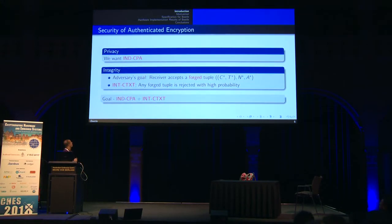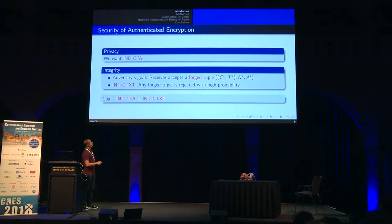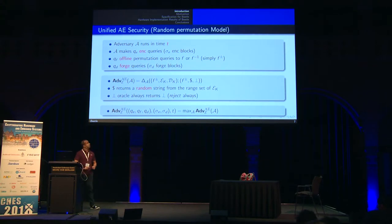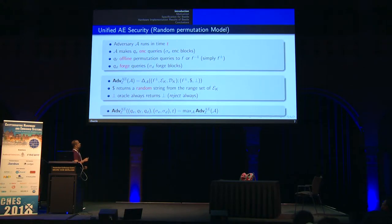For security, we need IND-CPA security for privacy, which is very standard. For integrity, we need INT-CTXT — integrity of ciphertext — where the ciphertext is integrated with the tag. Overall, we need both IND-CPA and INT-CTXT security from the same construction. This is a unified AE security model. In addition to standard oracles, we give the adversary an additional oracle called a public random permutation oracle — this is called the random permutation model, or unified AE security under the random permutation model.